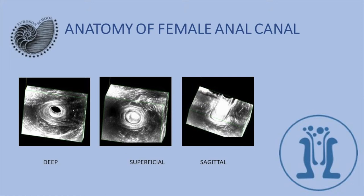Here is the external anal sphincter in the posterior position, and here is the vagina. There is no external anal sphincter anteriorly, and the internal anal sphincter is very short in this nulliparous woman — it's just lower. This is very important for surgeons.